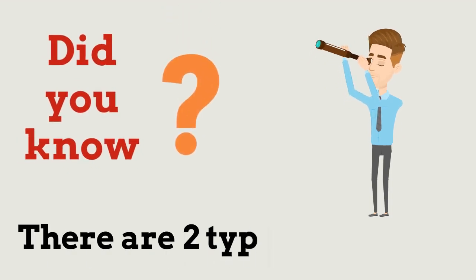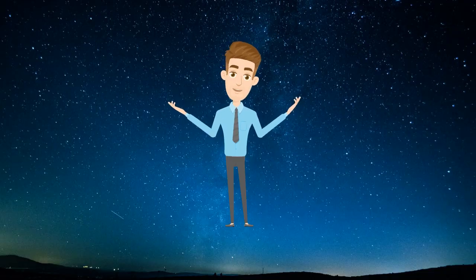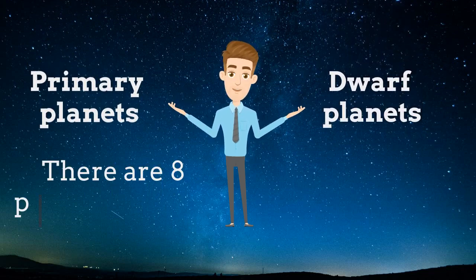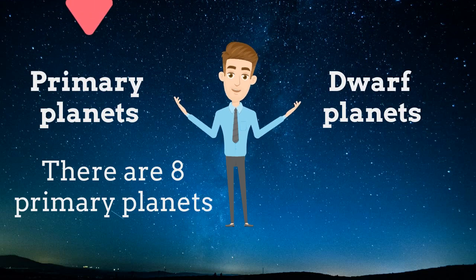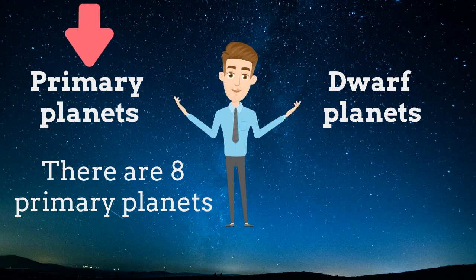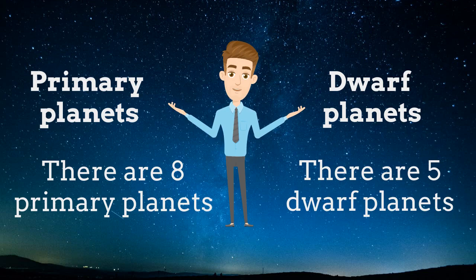Did you know? There are 2 types of planets. Primary planets and dwarf planets. There are 8 primary planets. And primary planets are the main planets which orbit the sun. Today we are going to learn about these primary planets in this video. And there are 5 dwarf planets. These dwarf planets are very small in size.